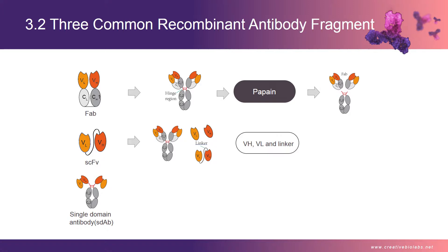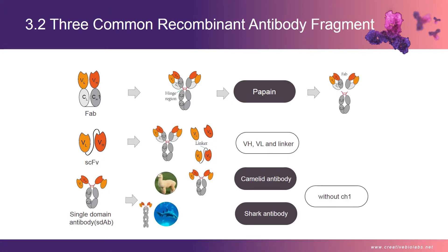and the light chain variable domain (VL) linked to a constant domain (CL). Due to the hinge region, which allows for flexibility of Fabs in relation to the Fc, intact IgGs have proven difficult to crystallize in forms suitable for diffraction studies, and thus only a few structures for intact IgGs have been determined.